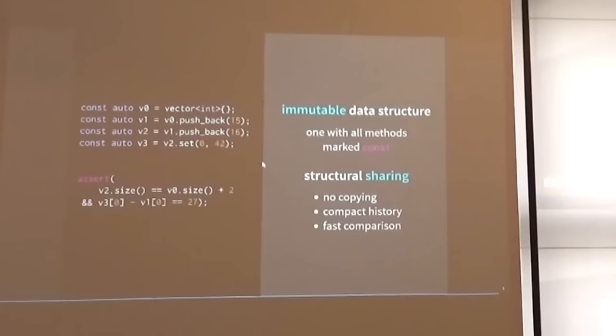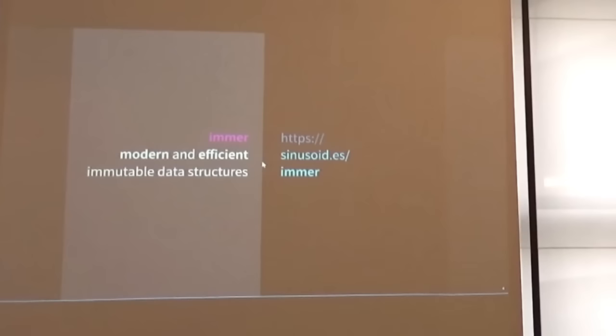I'm presenting Imer, which is a library of immutable data structures that, unlike many of the trivial implementations of immutable data structures, focuses on efficiency. So it's using state-of-the-art data structures like RBV trees and hash array mapped trees and whatnot, that are battle-tested in languages like Clojure and Scala in big production systems. And I'm doing this in modern C++. Check it out on this website. Thank you very much.